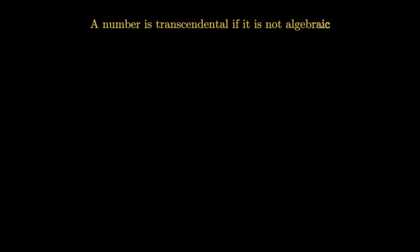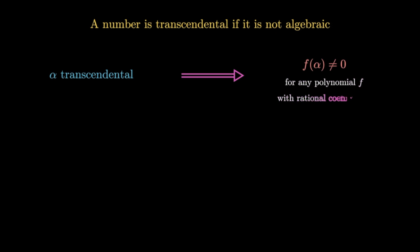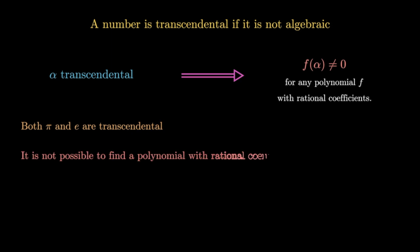A number is said to be transcendental if it is not algebraic. In other words, if alpha is a transcendental number, then alpha is not the root of any polynomial with rational coefficients. Both π and Euler's number are transcendental — it's not possible to find a polynomial with rational coefficients such that f(π) = 0 or f(e) = 0. No such polynomial exists.